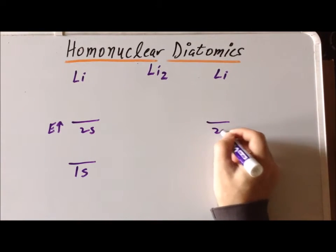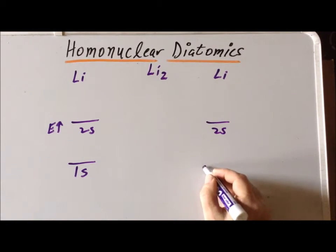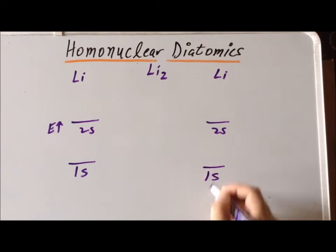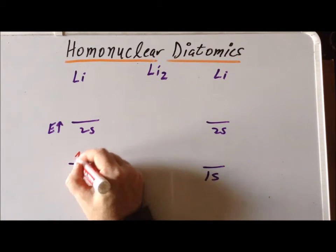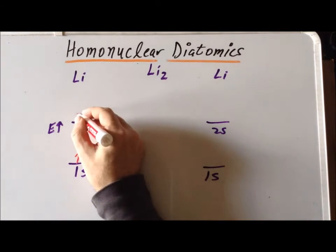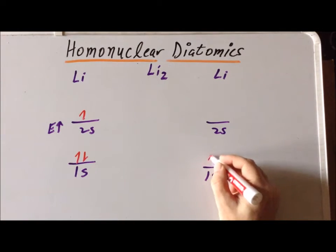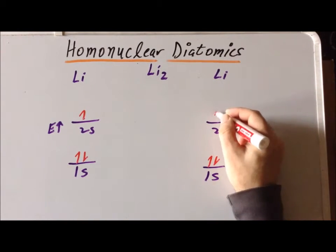So we're sketching in the lithium atomic orbitals on the right and left hand sides of our table. Since lithium has three valence electrons, let's fill in the atomic orbitals with the three electrons that lithium has.